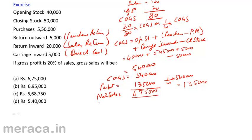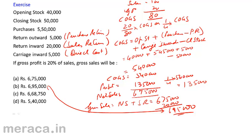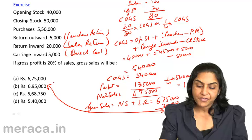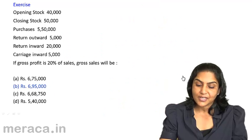Gross sales would be equal to net sales plus sales return, which is equal to 6,75,000 plus 20,000 equals 6,95,000. Do we have an option of 6,95,000? Yes, option B. Therefore our correct answer is option B. 6,95,000 would be the value of gross sales.